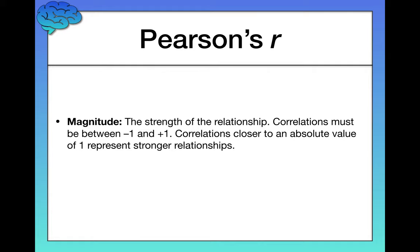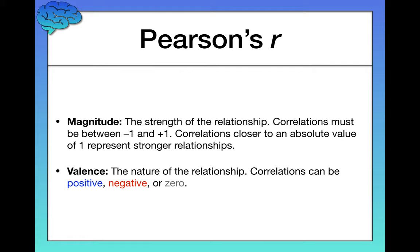Really easy to tell that right off the bat. The second thing to pay attention to is the valence, meaning the charge of the relationship, which is basically just a fancy way of saying the nature of the relationship. What does the relationship between these two variables look like? Is it positive, is it negative, or is it zero? And that's what I'm going to focus on next.